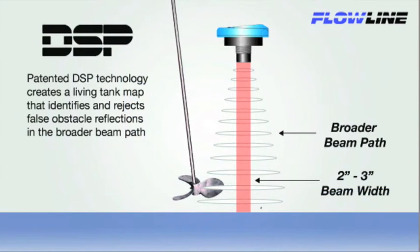Flowline's digital signal processing, or DSP technology, creates a living tank map that identifies false obstacle reflections in the full beam path.